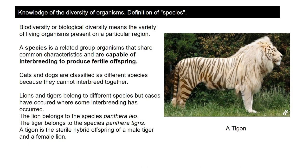Cats and dogs are obviously different species because they can't breed with each other. There are exceptions in closely related species - for example, lions and tigers are different species, but they can breed together in certain circumstances. A liger and a tigon are examples. A tigon is a cross between a male tiger and a female lion, but it's significant that a tigon is not a new species because a tigon is infertile itself. A species is a group of organisms capable of interbreeding to produce fertile offspring.